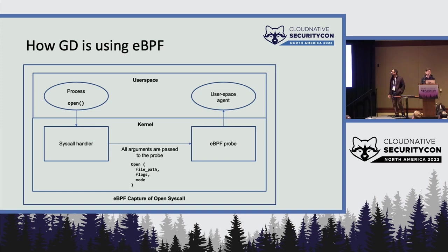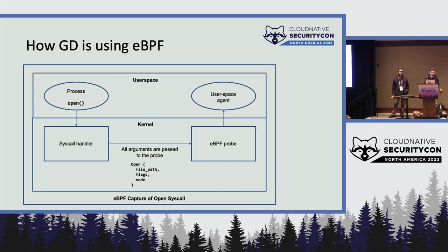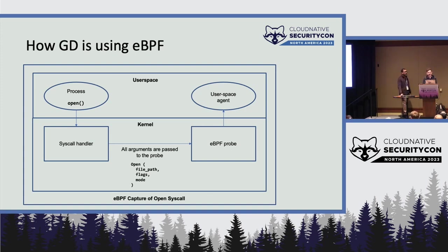Here's a very simplistic example of how GuardDuty is using eBPF. In this example, we have a process running in user space that's attempting to open a file. It calls a system handler, and the arguments used to call that handler are passed into the eBPF probe. That eBPF probe then has the ability to send that information to a user space agent.